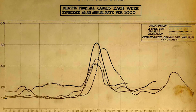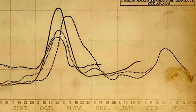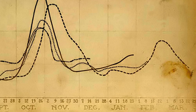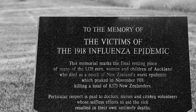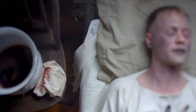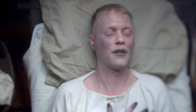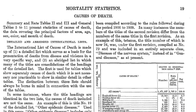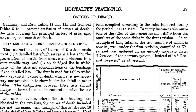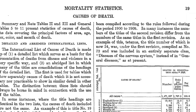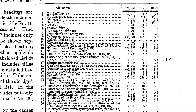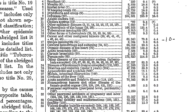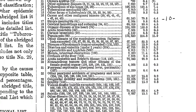By the spring of 1919, the number of deaths from the Spanish flu were decreasing, but countries were left devastated in the wake of the outbreak. Pneumonia or other respiratory complications brought about by the flu were often the main causes of death, which makes it hard to determine the exact numbers killed by the flu, as the listed cause of death was often something else.